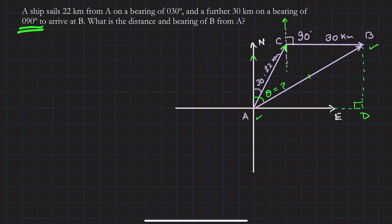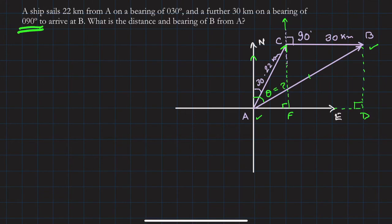Let me drop a perpendicular here and call this point F. Now let's solve. To find AB, if we know AD and BD — where BD is the perpendicular drop — we can apply Pythagoras' theorem.